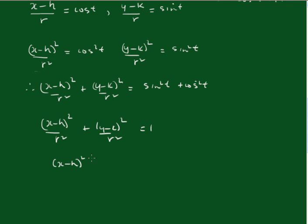x minus h all squared plus y minus k all squared equals r squared. And you might have recognized this as being the Cartesian form of a circle with the centre at h, k and a radius of r.